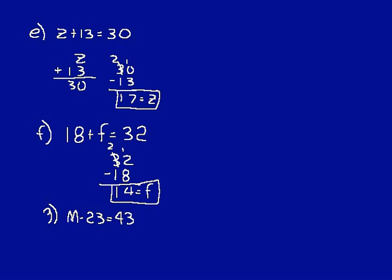Look at this problem: m minus 23 equals 43. We're trying to find the larger number of that difference, so we add 23 and 43 together. Rewrite them vertically: 3 plus 3 is 6, 4 plus 2 is 6, so m equals 66. You can always check your work: does 66 minus 23 equal 43? Yes, it does.